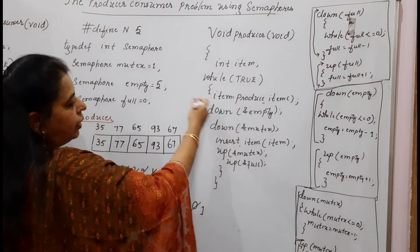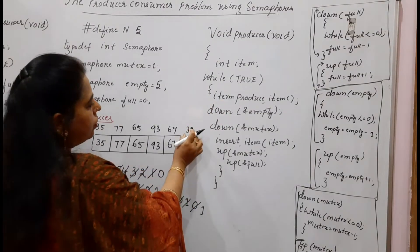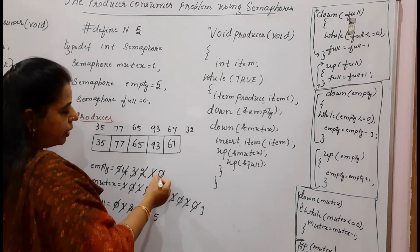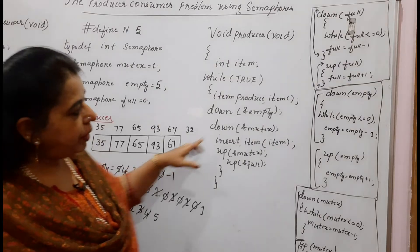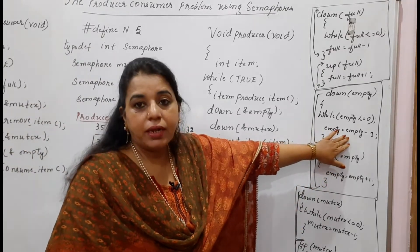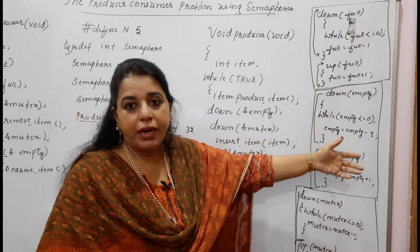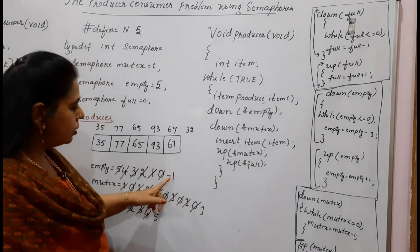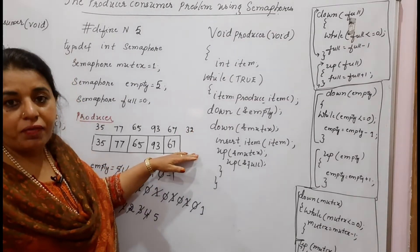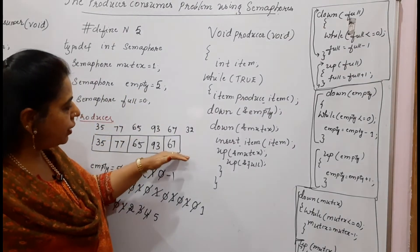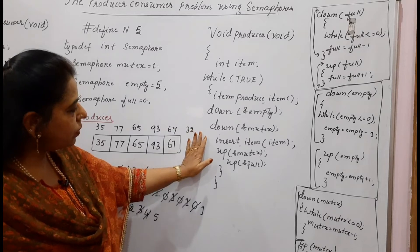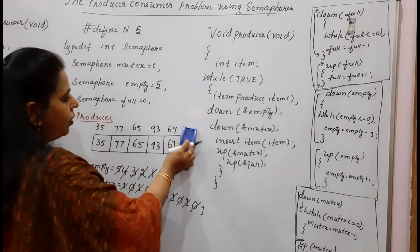All slots are now filled. The producer tries to produce another item — say 32 — and performs down on empty. Empty would become minus 1. Checking the definition: minus 1 less than or equal to 0 — the condition becomes true. The control stays in the loop and never comes out. The producer is stuck there and cannot insert. This is exactly what we wanted: the producer stops producing once all slots are filled.